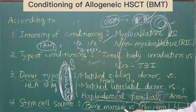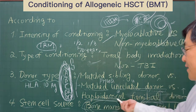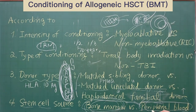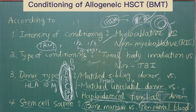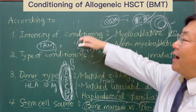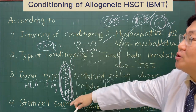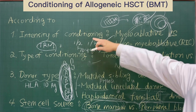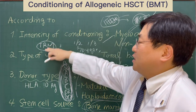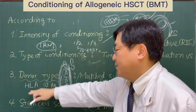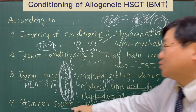So except for aplastic anemia, we can use bone marrow stem cells as well as peripheral blood stem cells in the same way. I have explained the four types of classification according to intensity of conditioning, type of conditioning, donor type, and stem cell source.